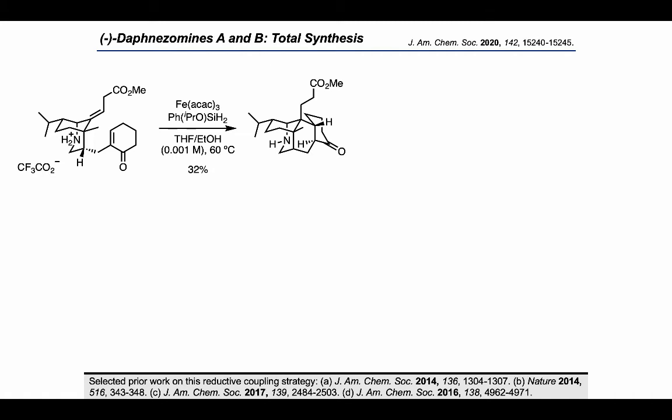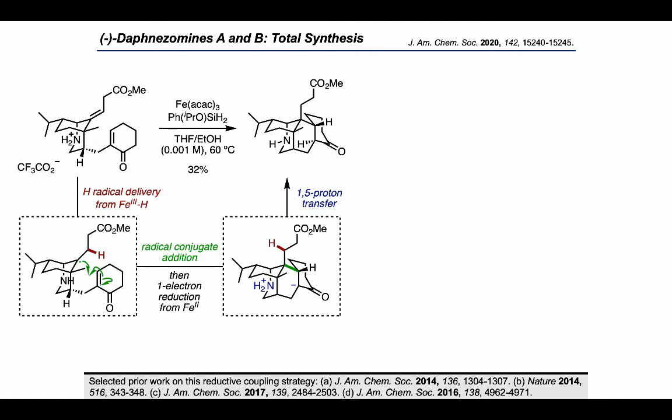Applying the generally accepted mechanistic framework for this type of transformation, we expect that this is occurring by delivery of a hydrogen radical to the trisubstituted alkene, followed by a radical conjugate addition and one-electron reduction to form an enolate that the authors proposed is quenched diastereoselectively via a 1,5-proton transfer from the ammonium.